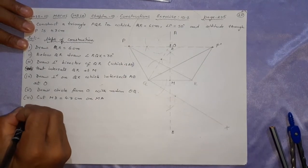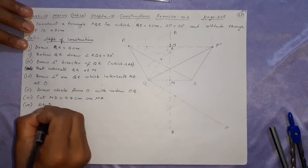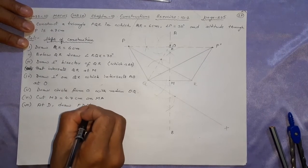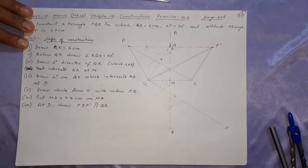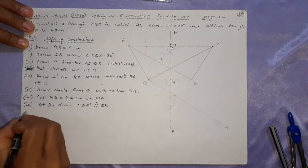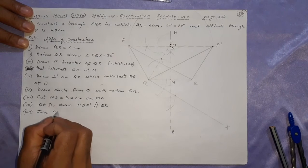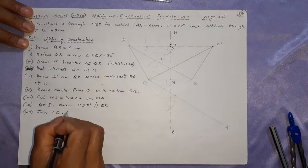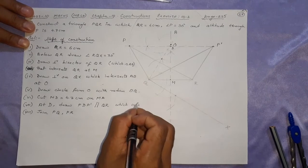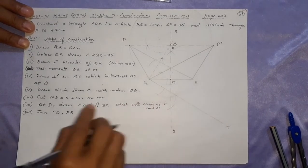Next step: At D, draw or construct PDP dash parallel to QR. PDP dash which should be parallel to QR — after that only joining remains. This cuts the circle at P and P dash. Join PQ, PR, P dash Q, and P dash R. Triangle PQR and triangle P dash QR are the required triangles.